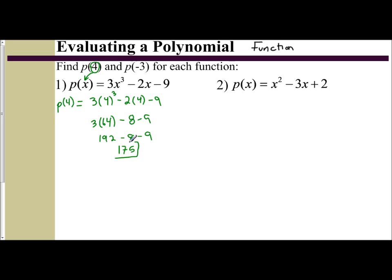And so that is the value of P(4). Now, if I want to do P(-3), it's the same idea. I'm going to plug -3 in for x in my polynomial. So P(-3) means you replace your x variable with -3. So 3 times x cubed becomes 3 times (-3)³, minus 2 times (-3), minus 9.